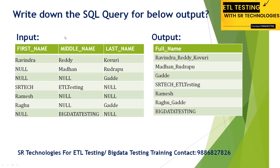Generally, we have an employee table which contains ID as well as first name, middle name, and last name. The output they are expecting — if you look at the first row, we have Ravindra and after that the values from the three columns.